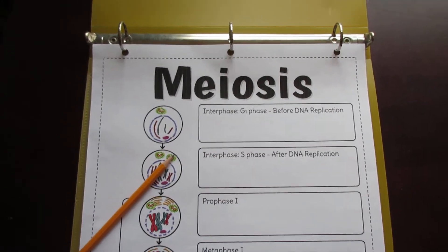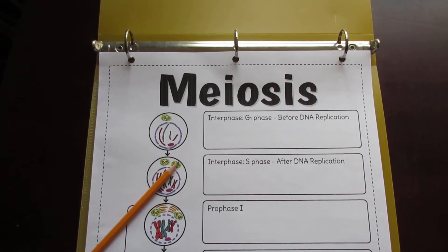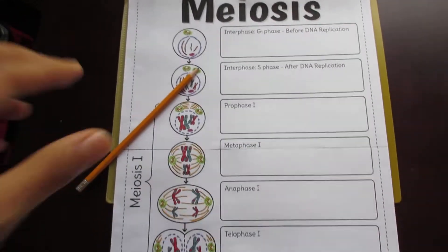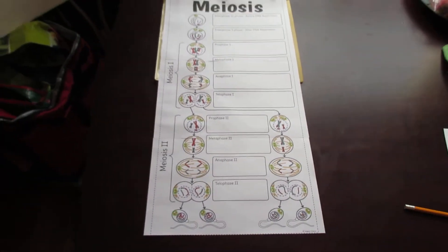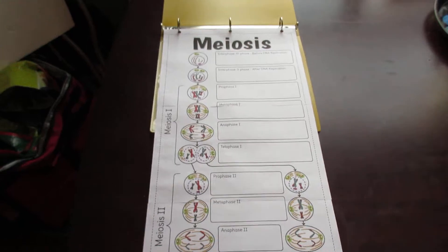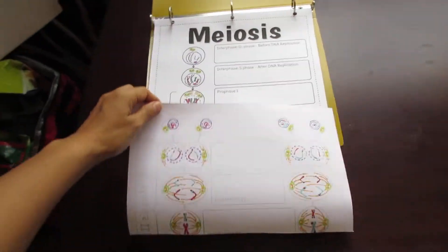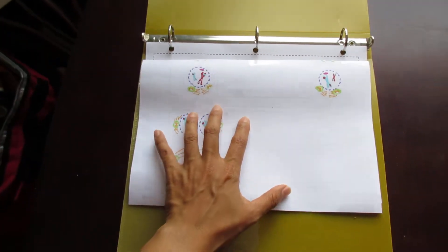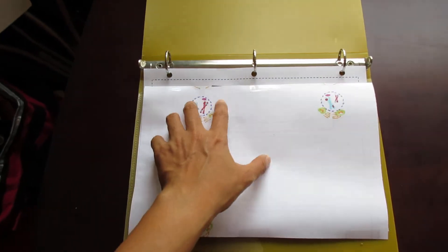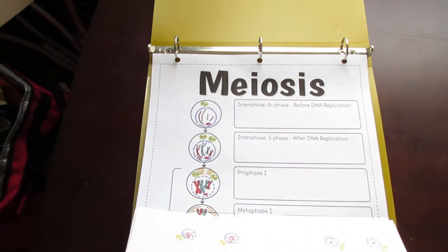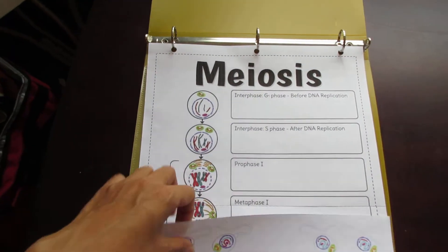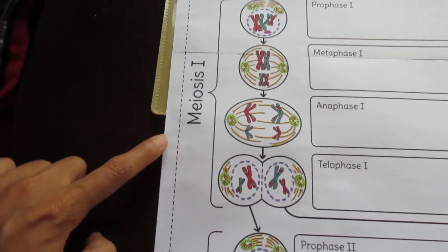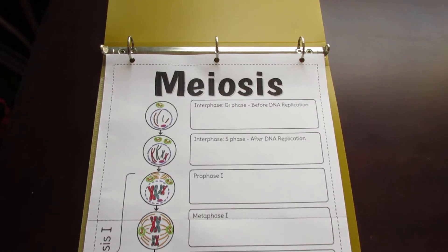This is the Tangstar Science Big Meiosis Foldable. Big in this particular case means three pages big, so that when the pages are cut along the seams and taped, they create a foldable that fits neatly into one binder without overlapping the binder rings. If you want to use this for an interactive notebook, just cut along the dash lines to make the foldable smaller. Now let's take a tour of this foldable.